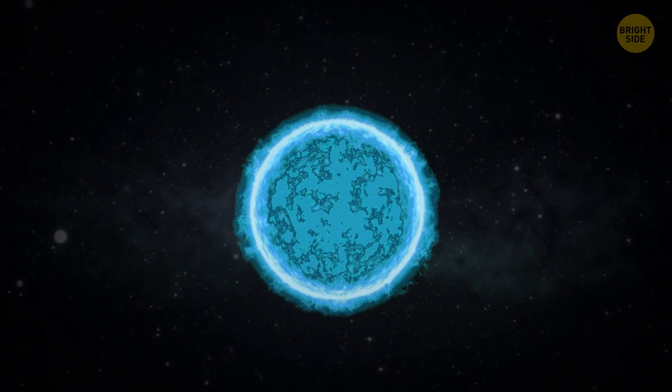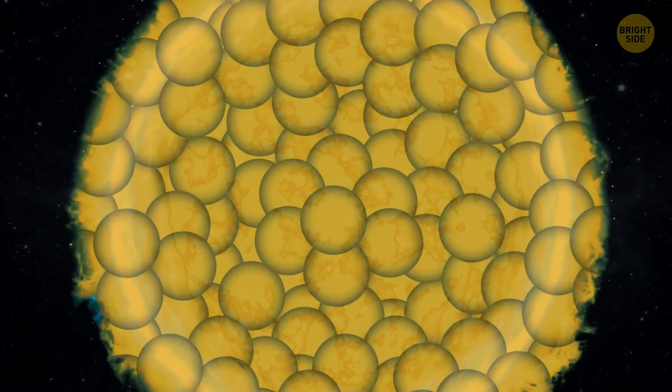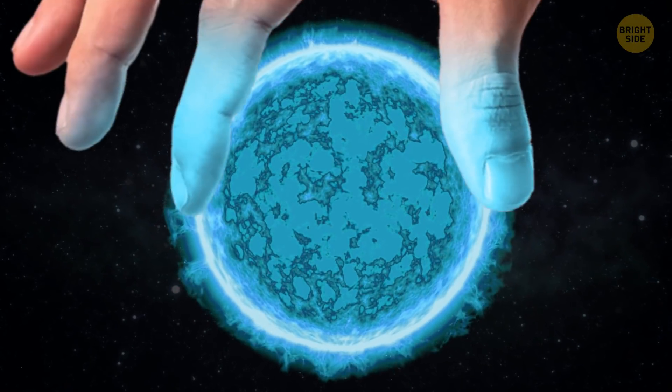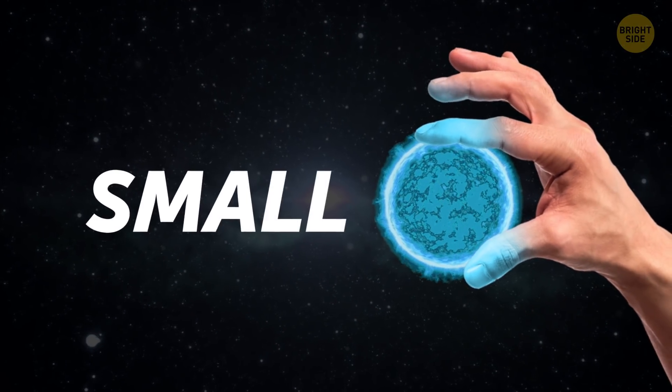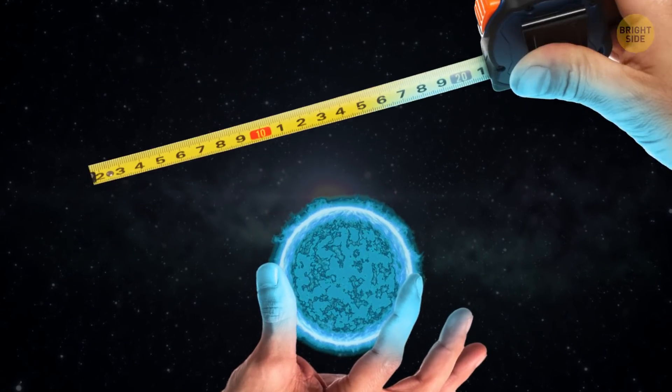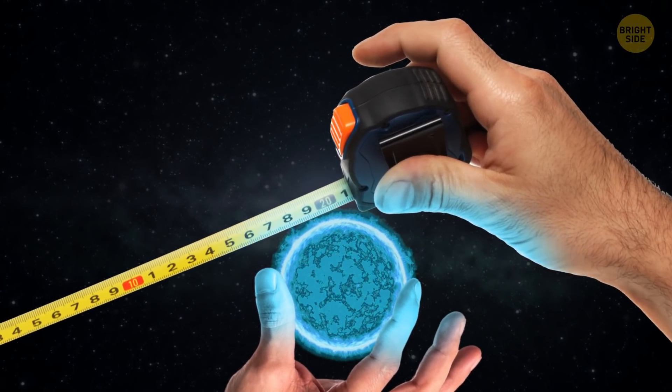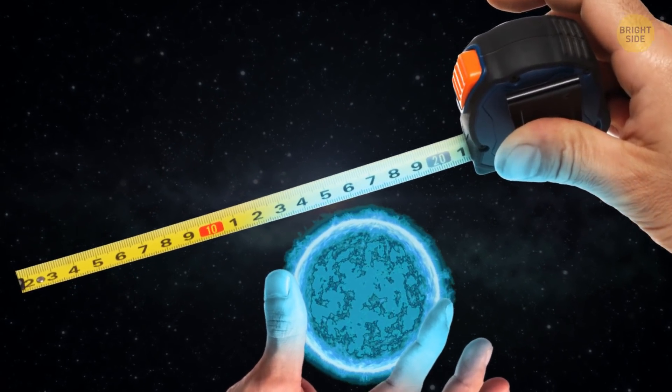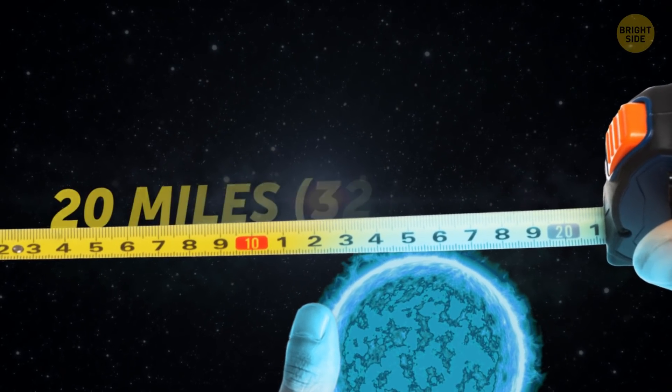A neutron star, which is basically a giant nucleus, the central part of an atom, is relatively small. Even though scientists don't know for sure how big neutron stars are, they suppose that these space bodies shouldn't be bigger than 20 miles across, roughly the size of Manhattan.